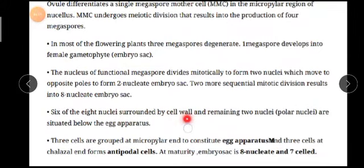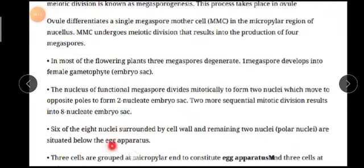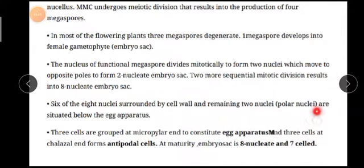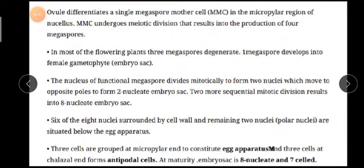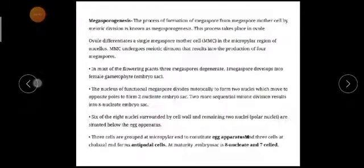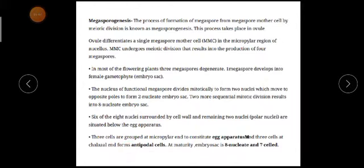Six nuclei will be surrounded by a cell wall and the two remaining are called polar nuclei. These two polar nuclei will come and be situated below the egg apparatus. Three of the six will group at the micropylar end to constitute the egg apparatus, and the other three will group at the chalazal end and are called antipodal cells.